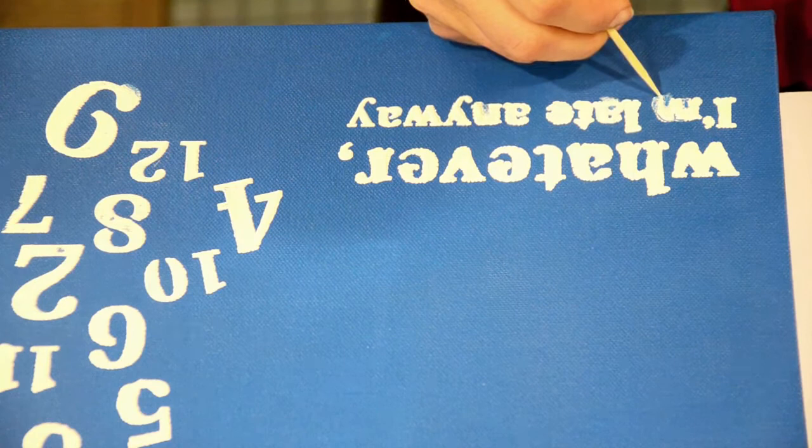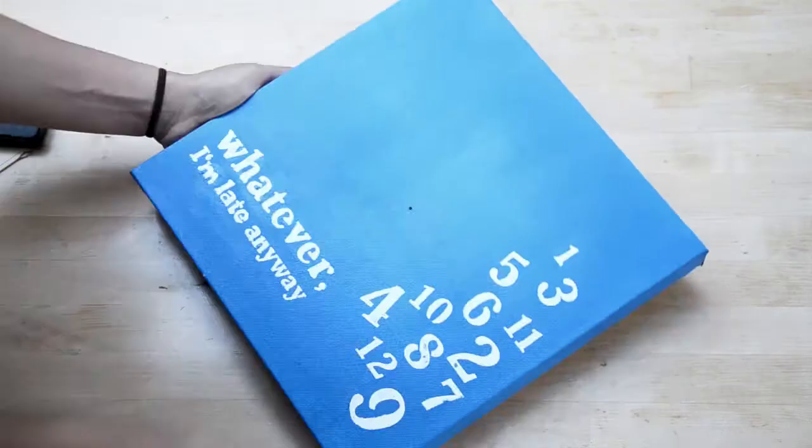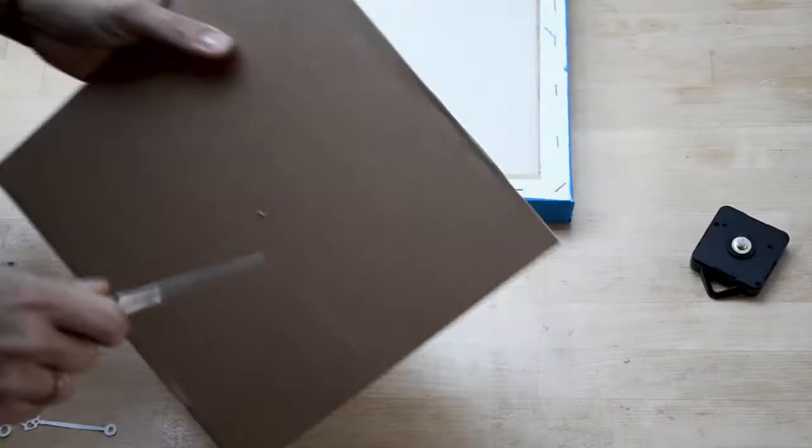Mark the middle of the canvas and punch a hole through it. Now you can cut a piece of cardboard to the size of the canvas which will support the DIY clock set later.